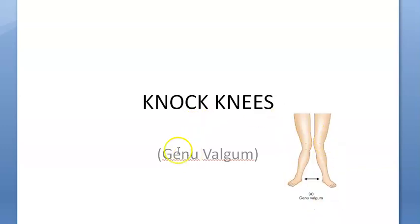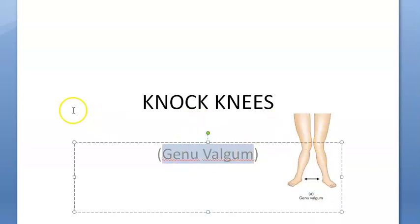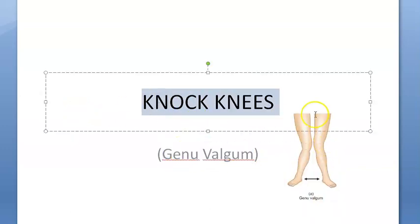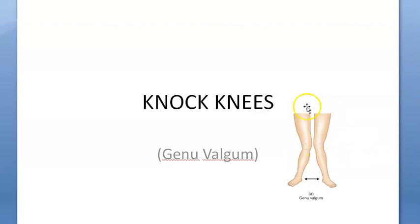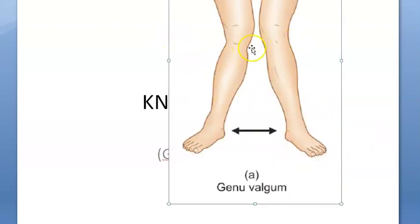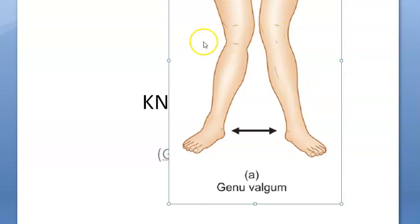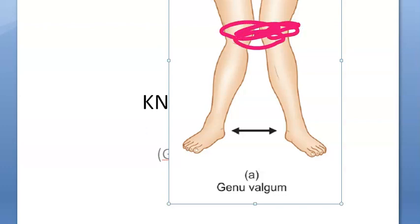In this video we want to look at genu valgum, so knock knees — knees are knocking each other. You can see here the knees are knocking each other. Genu valgum — genu is bend, or you can also refer it to the knee. The way I remember it is gum, so it is sticking together like gum. So genu valgum.